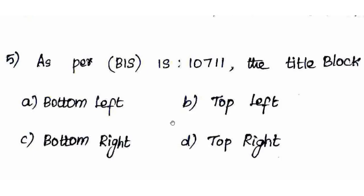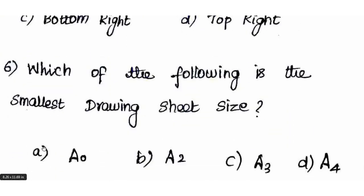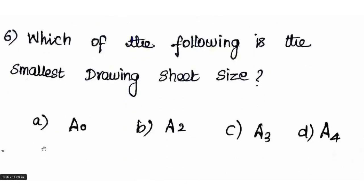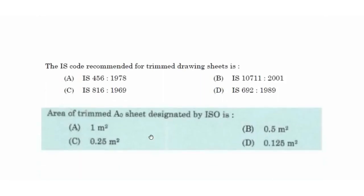The title block should be placed in the bottom right corner of the drawing, with dimensions 185 × 65 mm. The maximum width of the title block as per IS standard is 170 mm. The smallest standard drawing sheet size is A4. The IS code recommended for trimmed drawing sheets is IS 10711 2001 — the right answer is option B.